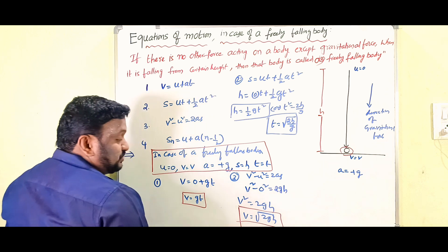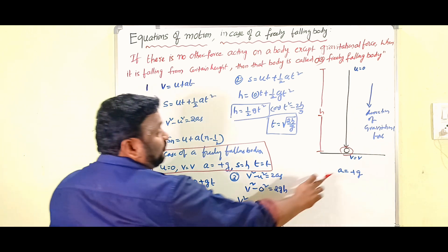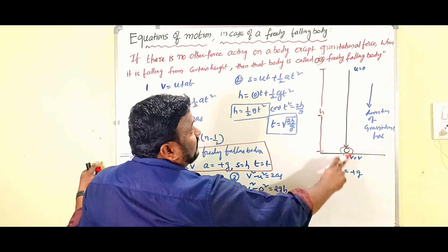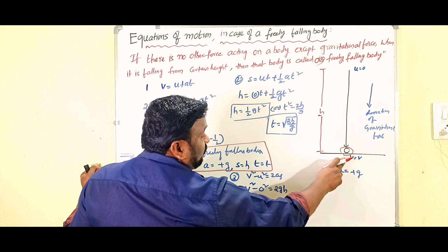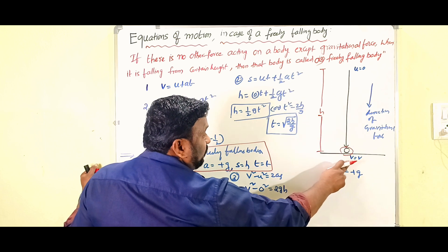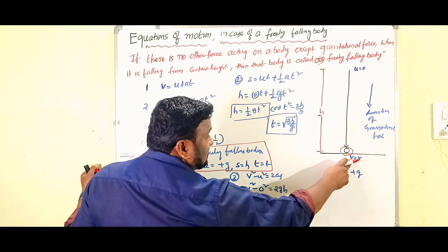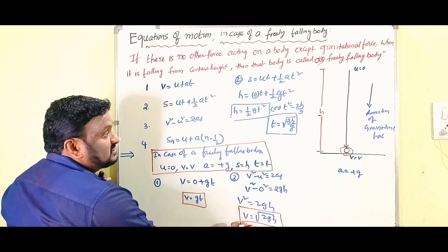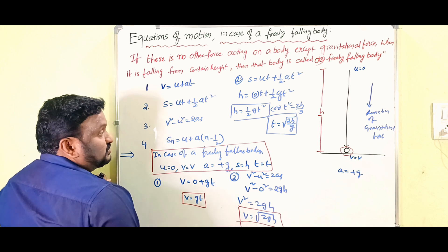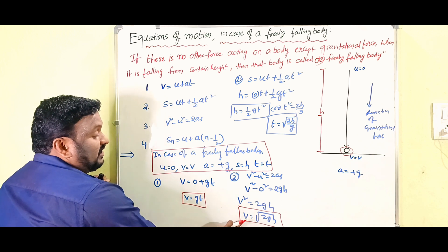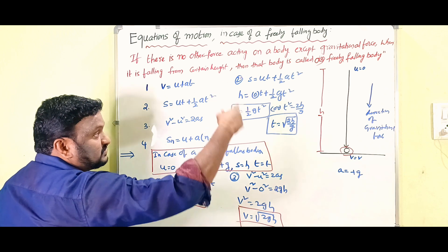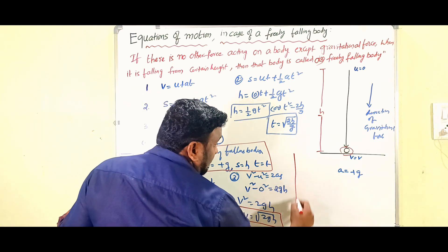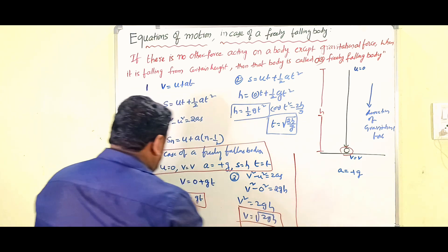When the body is coming from height h and it reaches the ground, its velocity is v — that's why v is the final velocity. So this is the expression for the final velocity when the body is falling from a certain height.